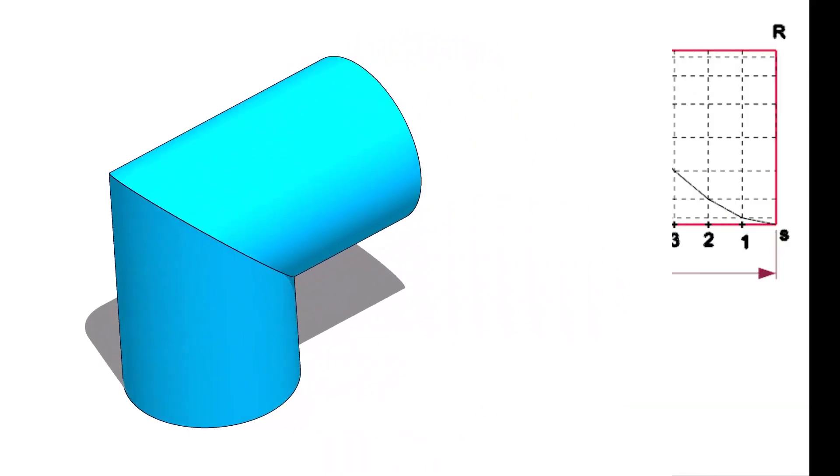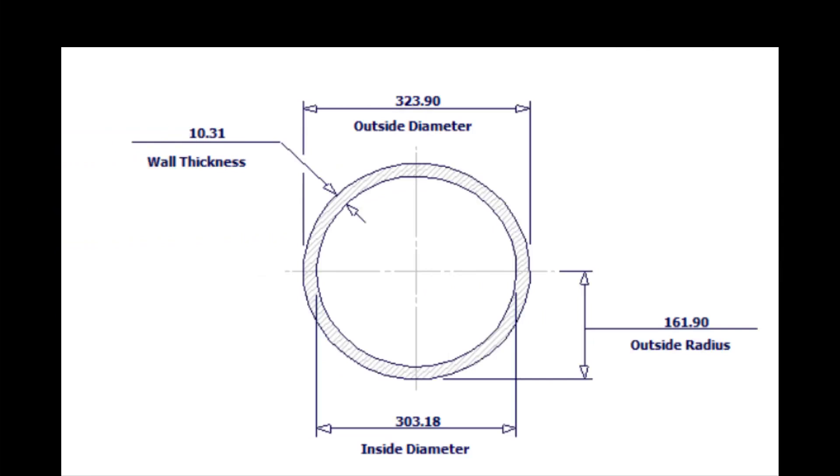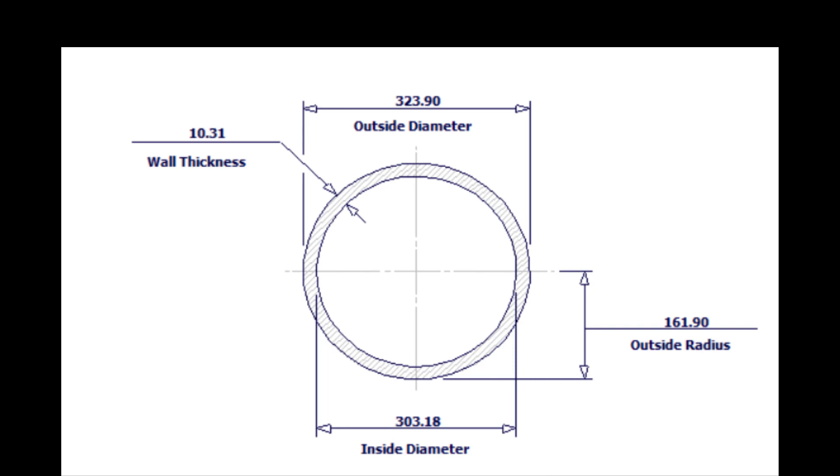In this tutorial, we will lay out a 12-inch single-cut miter. Outside diameter of a 12-inch pipe is 324 millimeters. Let us calculate the circumference. Multiply 324 into 3.14. The answer is 1017 millimeters.